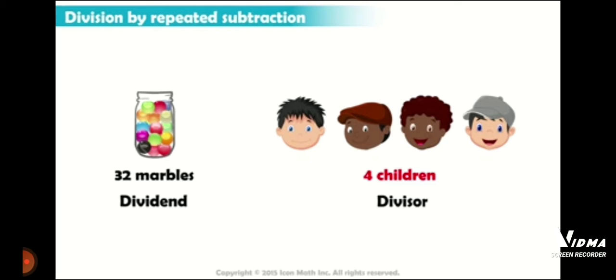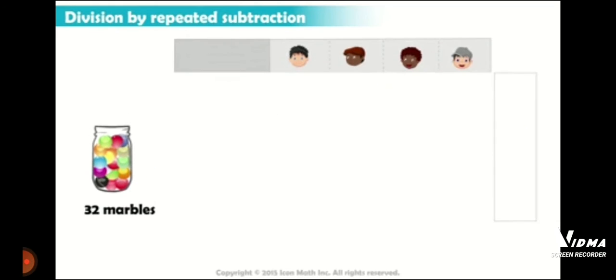You already know the process of dividend and divisor, how you can see which one is the dividend and which one is the divisor. So let's take out one by one. The number of marbles each child will get will be written in this rectangular box.